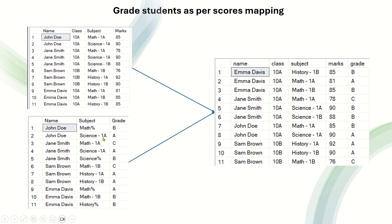The question is: you have two tables called students and grades, and you need to grade the students based on this mapping. In the first table you have the name, class, subject and marks. In the second table you have name, subject and grade. In the grades table you have subjects like science 1a, math 1a, math 1b, history 1a and 1b.